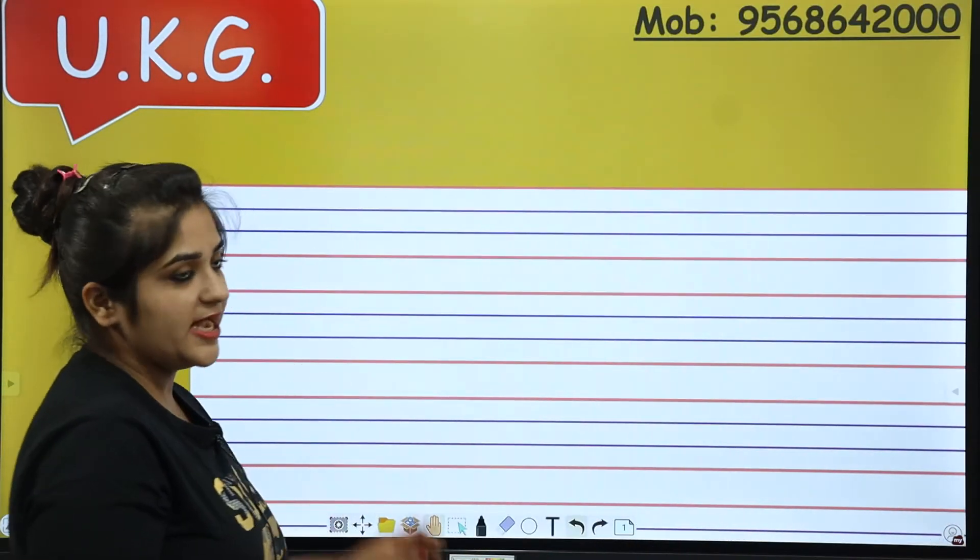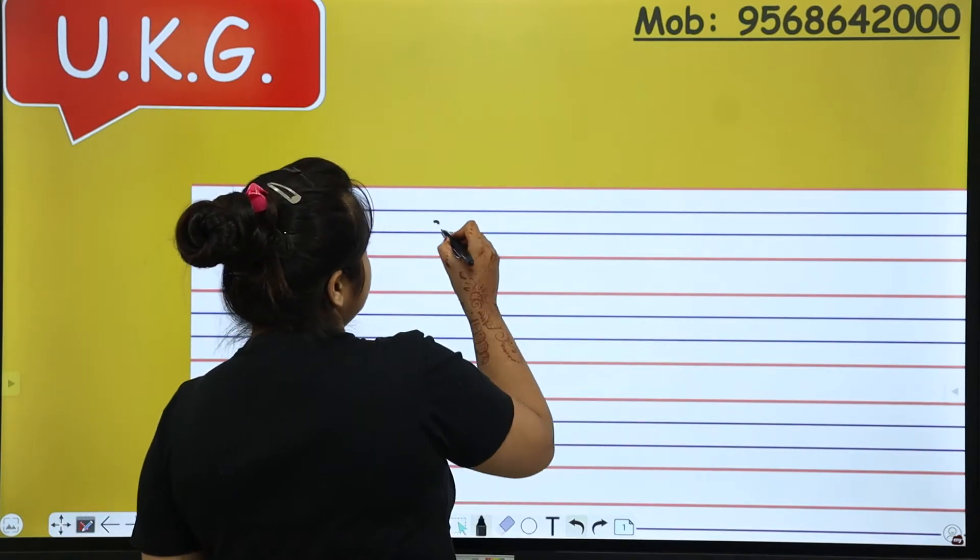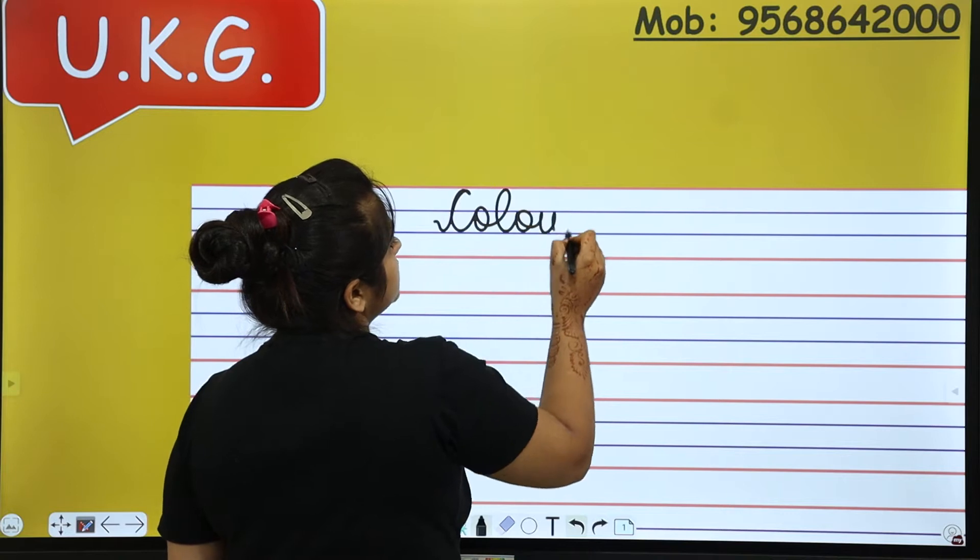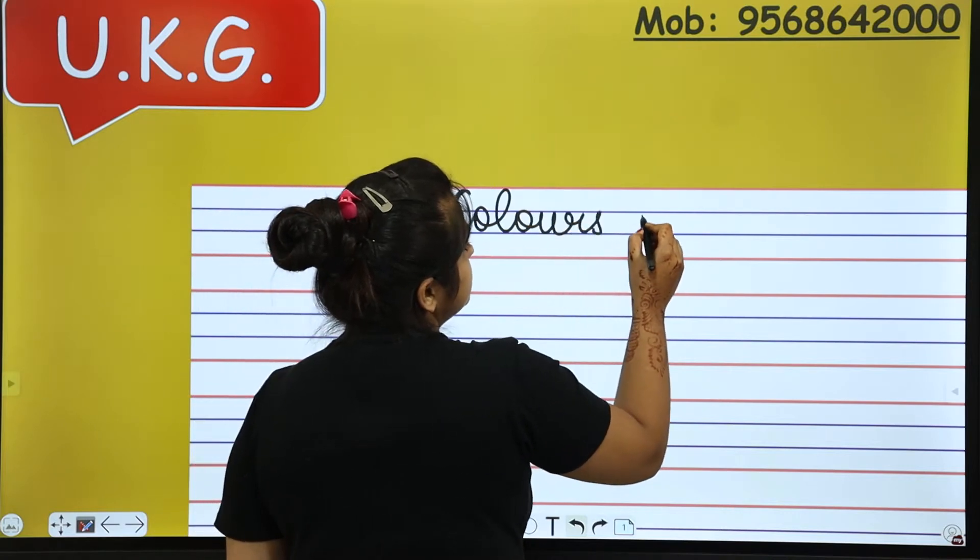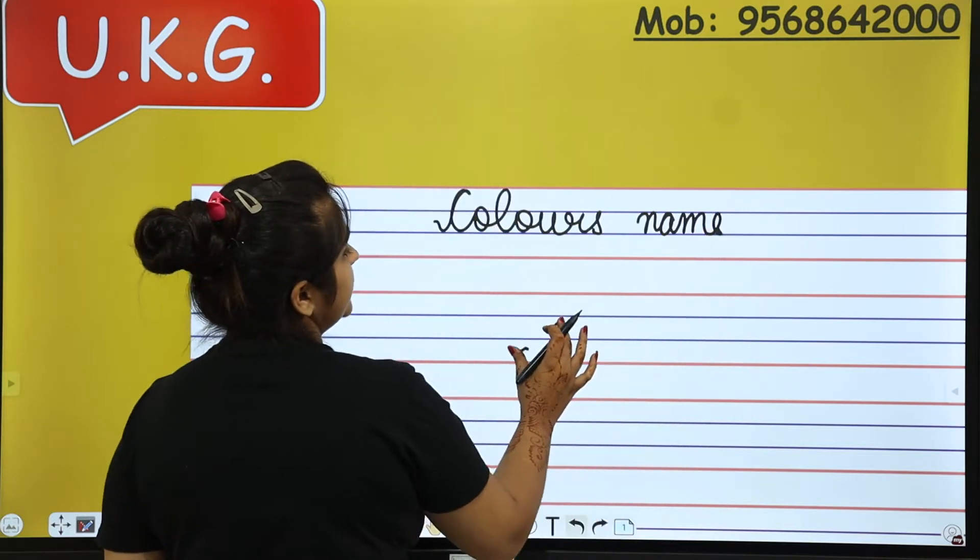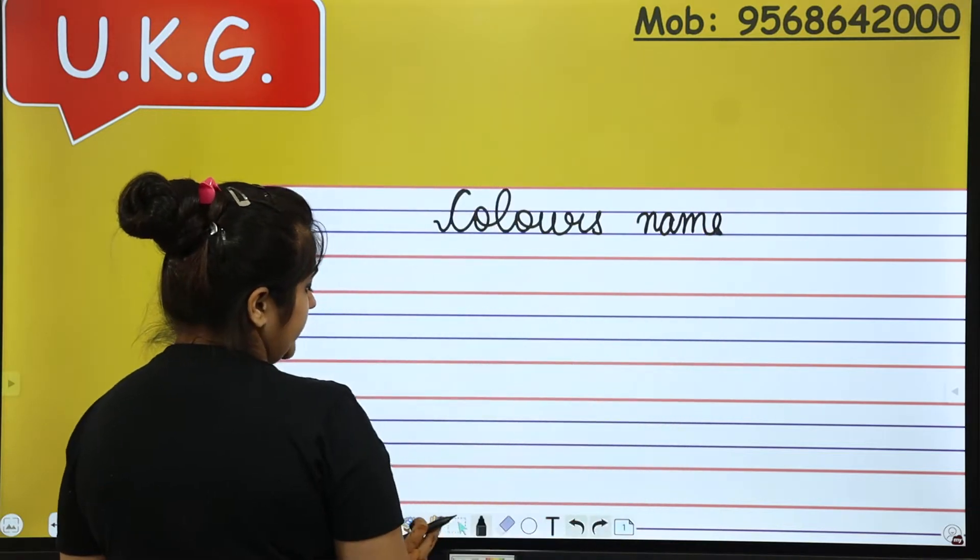First of all, you have to put a heading in the first line. Colors name. C-O-L-O-U-R-S. Colors name. Okay? Like this you have to put the heading.